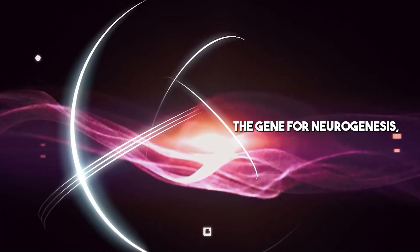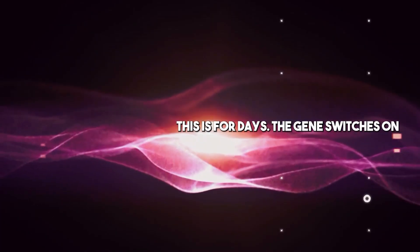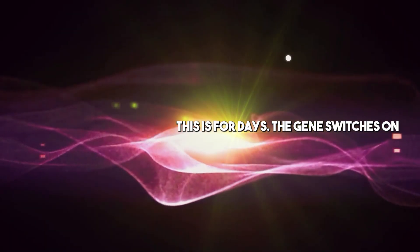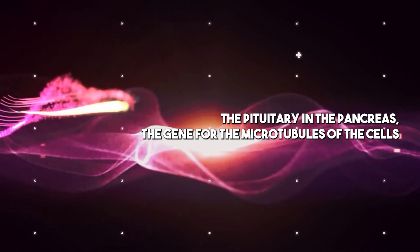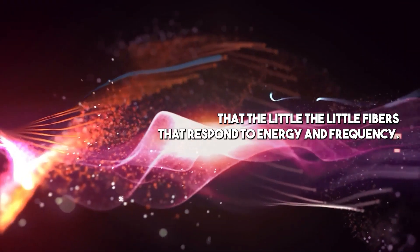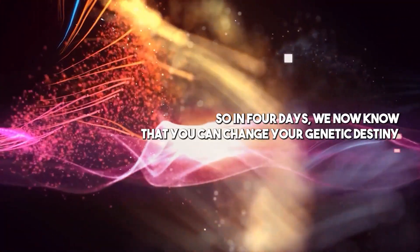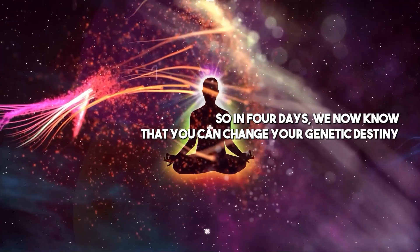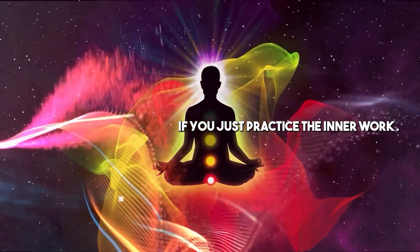The gene for neurogenesis, the growth of new neurons in response to novel experiences and learning. This is four days. The gene switches on. The gene for more balance in the pituitary and the pancreas. The gene for the microtubules of the cells, the little fibers that respond to energy and frequency. In four days, we now know that you can change your genetic destiny if you just practice the inner work.